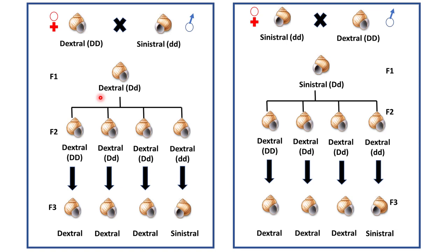Again, if you notice the F3 generation: all progeny from the capital D capital D mother would be dextral, all progeny from the capital D small d mother would be dextral, but all progeny from the small d small d mother would be sinistral — because the maternal genotype is small d small d. Hence, all those babies are sinistral.